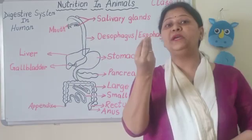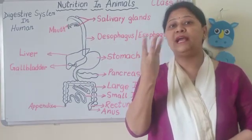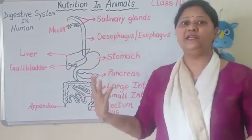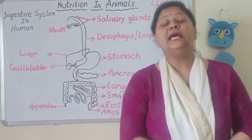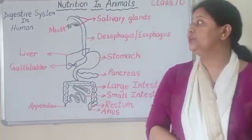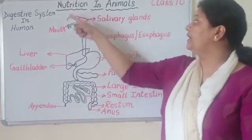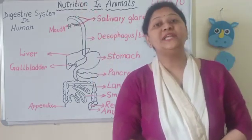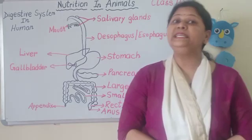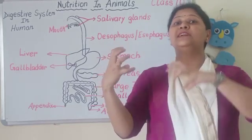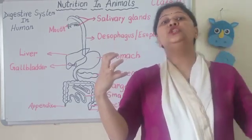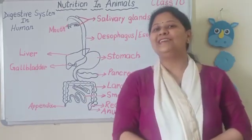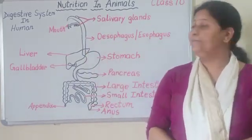Uske andar ka jo muscles hota hai woh rhythmic contract or relax karta hai, jiske karan food forward direction mein niche aata hai. One more important thing — whenever we are talking about digestion of food in the mouth, jo carbohydrate ka digestion hai, starch convert karta hai sugar mein, and starch is the carbohydrate. So carbohydrate ka digestion mouth mein shuru ho jata hai.